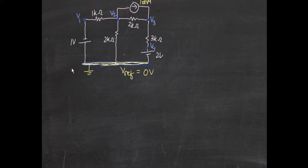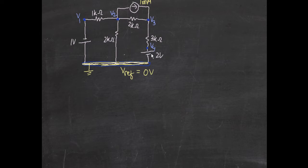Since the reference node is grounded, V reference is taken as zero volts. We have identified four nodes total. Since this is the reference node, we won't count it as a node requiring its own equation — it's just the reference that connects to all the other nodes.